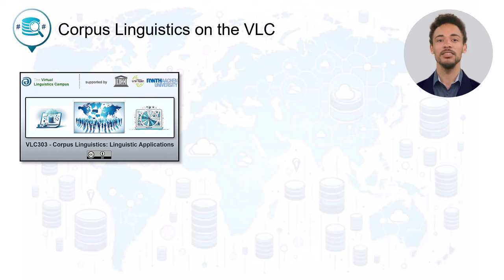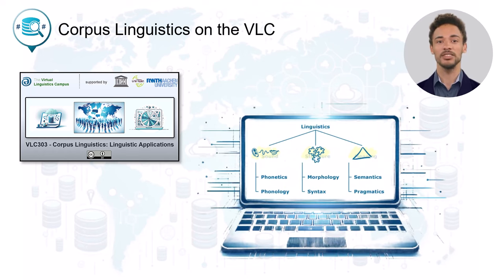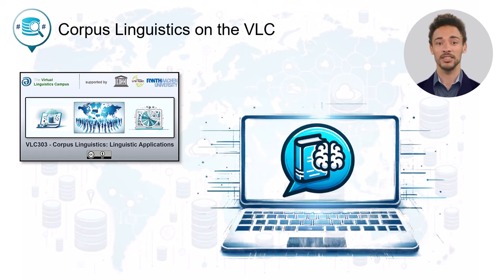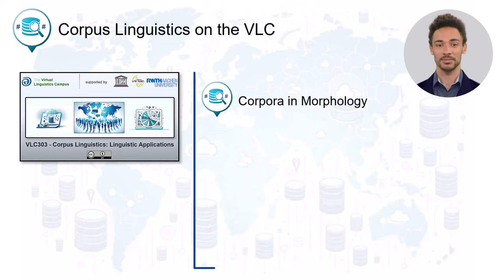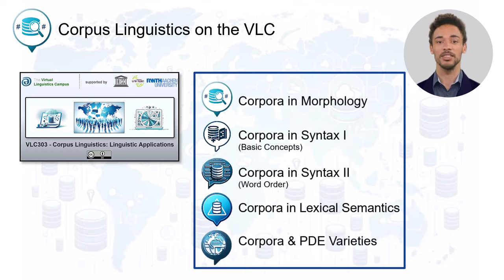VLC 303 aims at enhancing the understanding of linguistic theory through empirical evidence from corpus data. It consists of five main units and covers phenomena ranging from morphology, via syntax and lexical semantics, to comparative corpus studies.